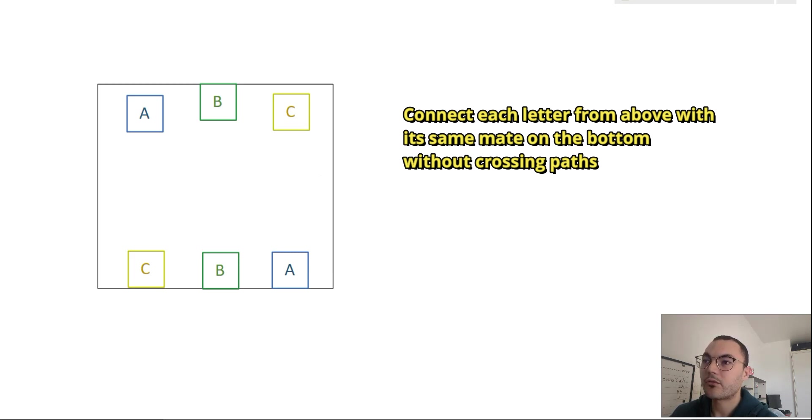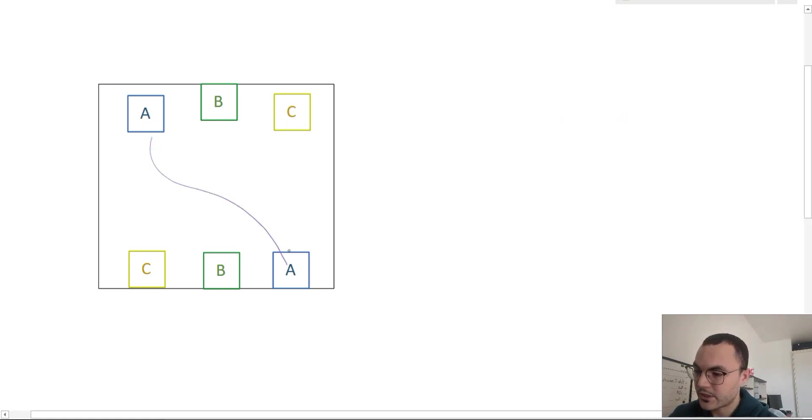If I connect A to A, well, to connect C I need to go through this path, but there is no way I can connect B to B.